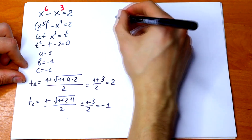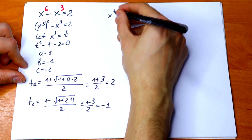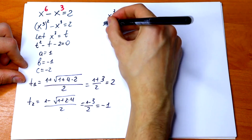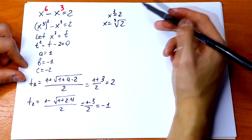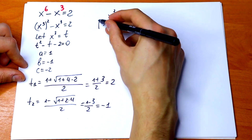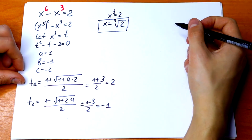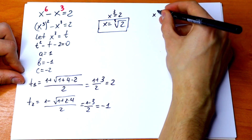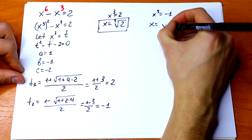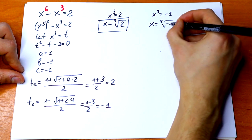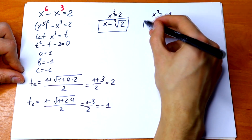So let's write two equations with our two roots. The first equation: x cube equal to 2, so x equal to cube root of 2. We take the cube root from both sides — this is our first root. For the second equation: x cube equal to minus 1, so x equal to cube root of minus 1, which equals minus 1. This is our second root.